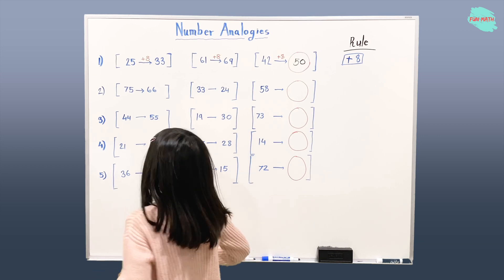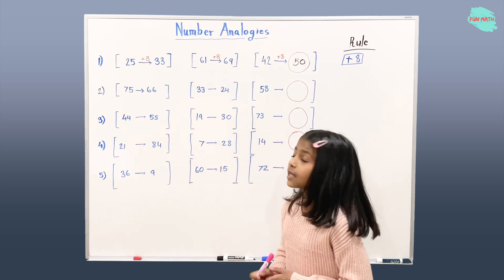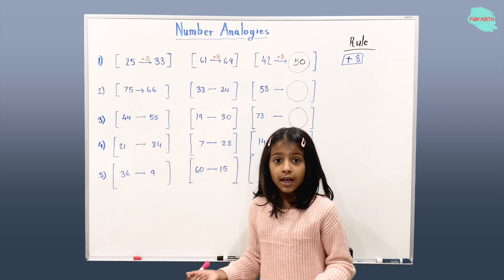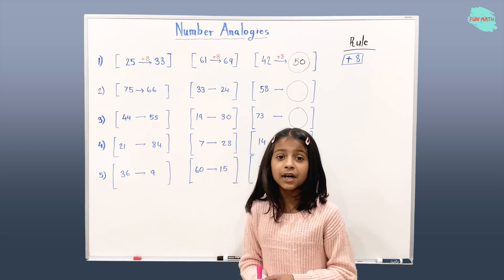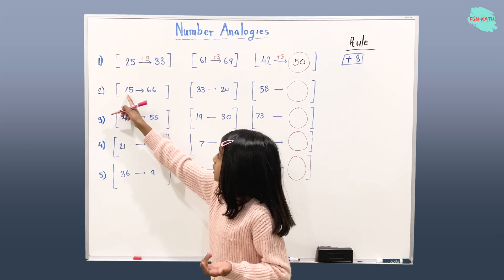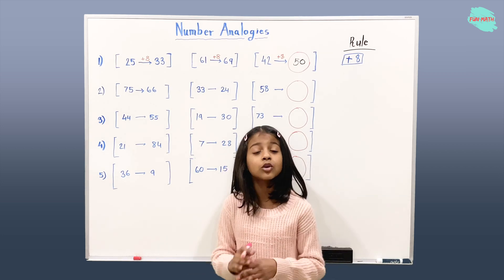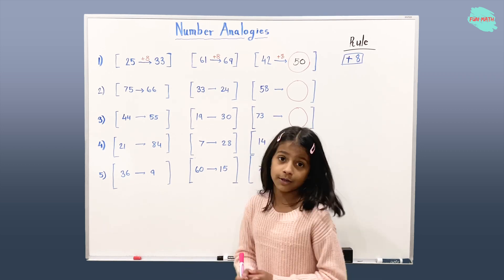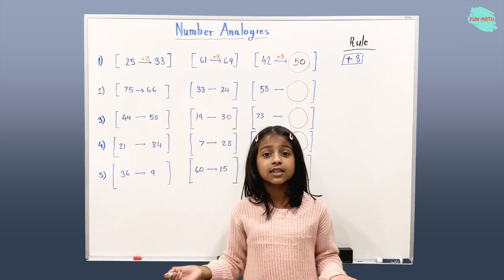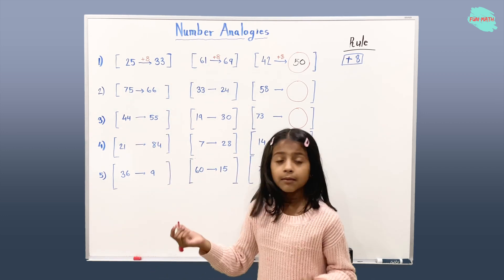Let's solve the second example. Here we're also using number analogies and we have three different groups. So here, if you see, it's either subtraction or division, but I don't think division can work because 75 and 66 are closer to each other. So division can't work, and we know it can only be subtraction. So what's 75 minus something that will give us 66? That number should be 75 minus 66, which is 9.